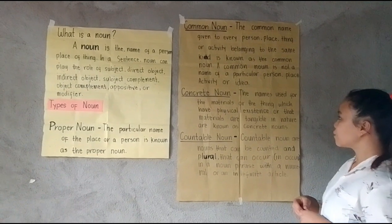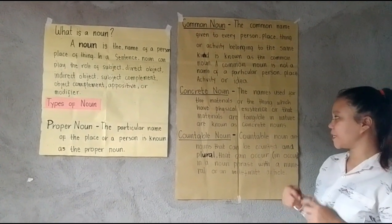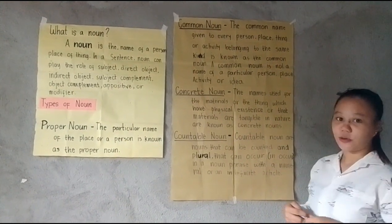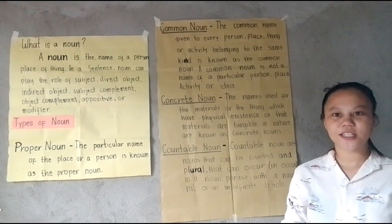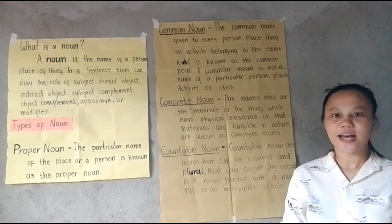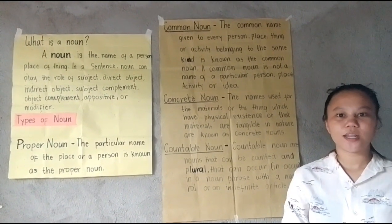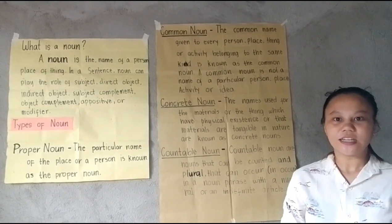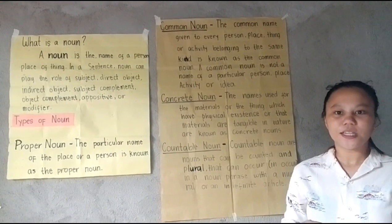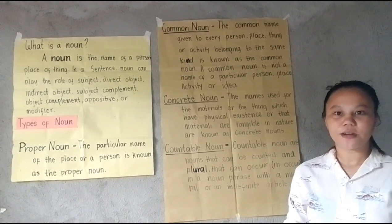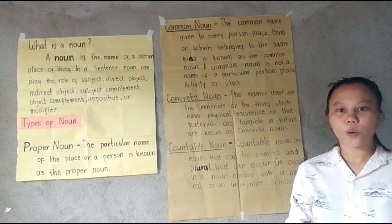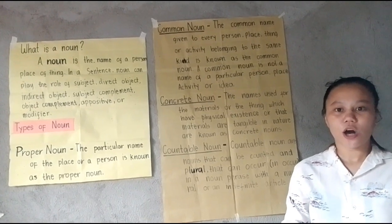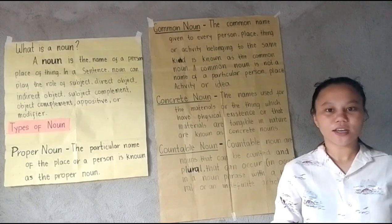Third: concrete noun. The names used for materials or things which have physical existence — that are tangible in nature — are known as concrete nouns. A concrete noun is a noun that refers to a physical thing, person, or place — something or someone that can be perceived with the five senses: touch, hearing, sight, smell, and taste. Concrete nouns may refer to things such as phone and hat, places such as the post office, or people and animals such as dog and doctor.